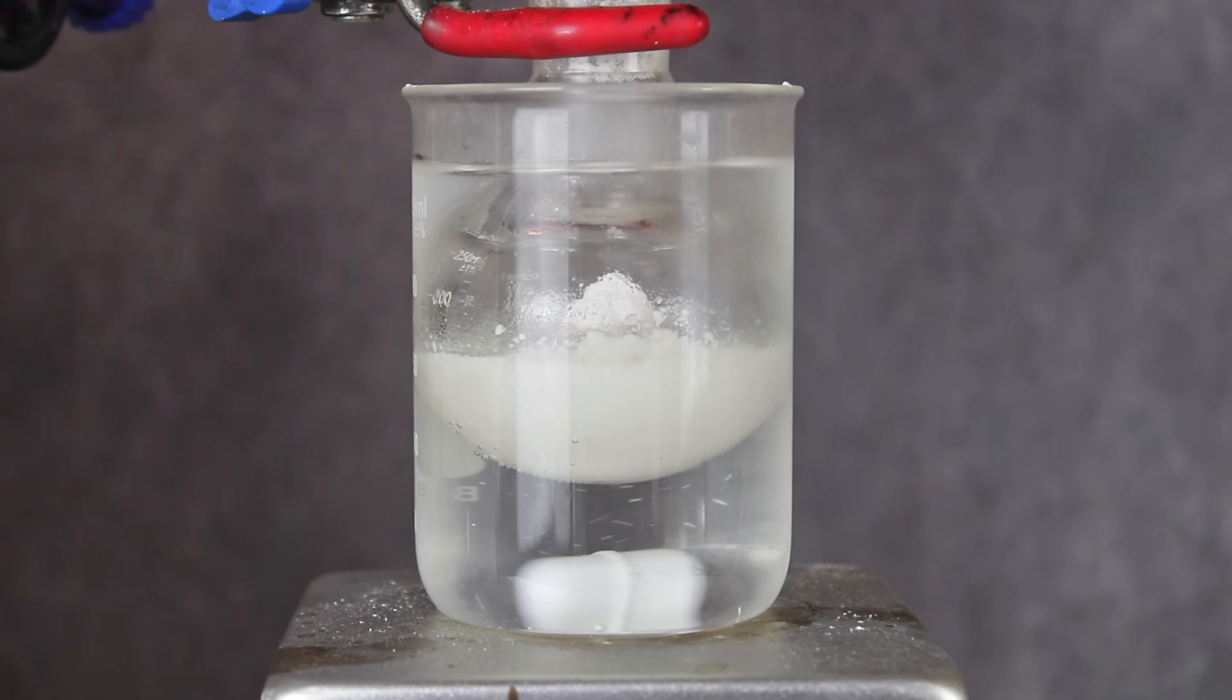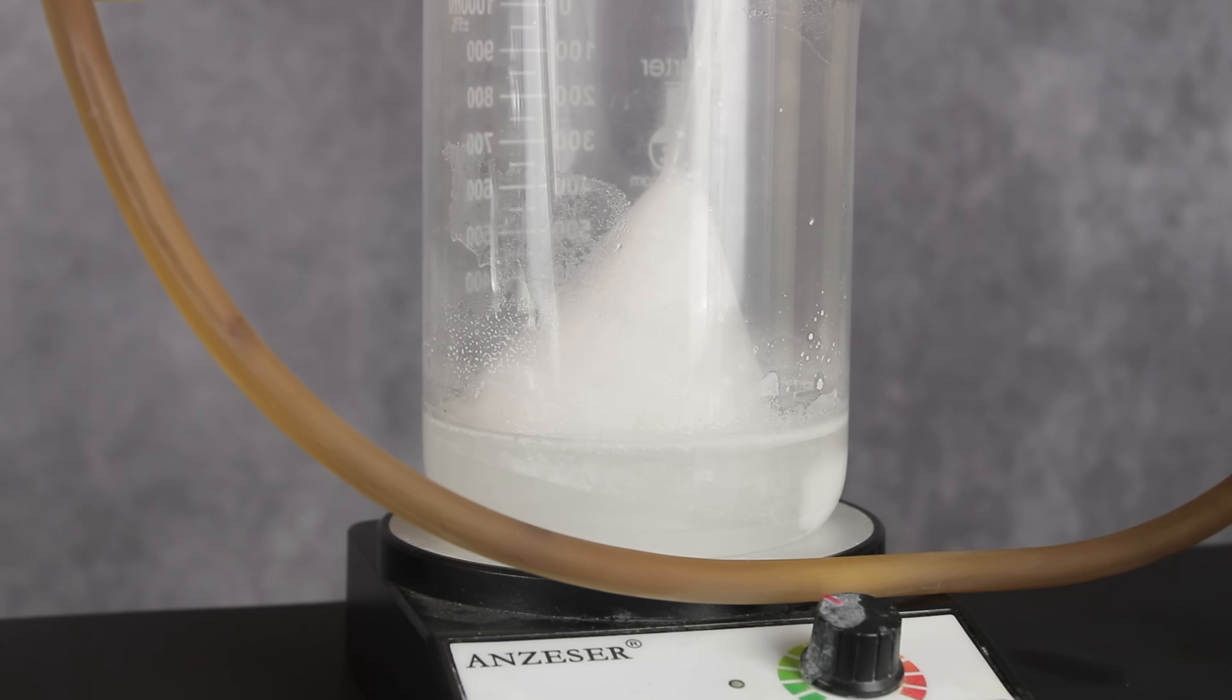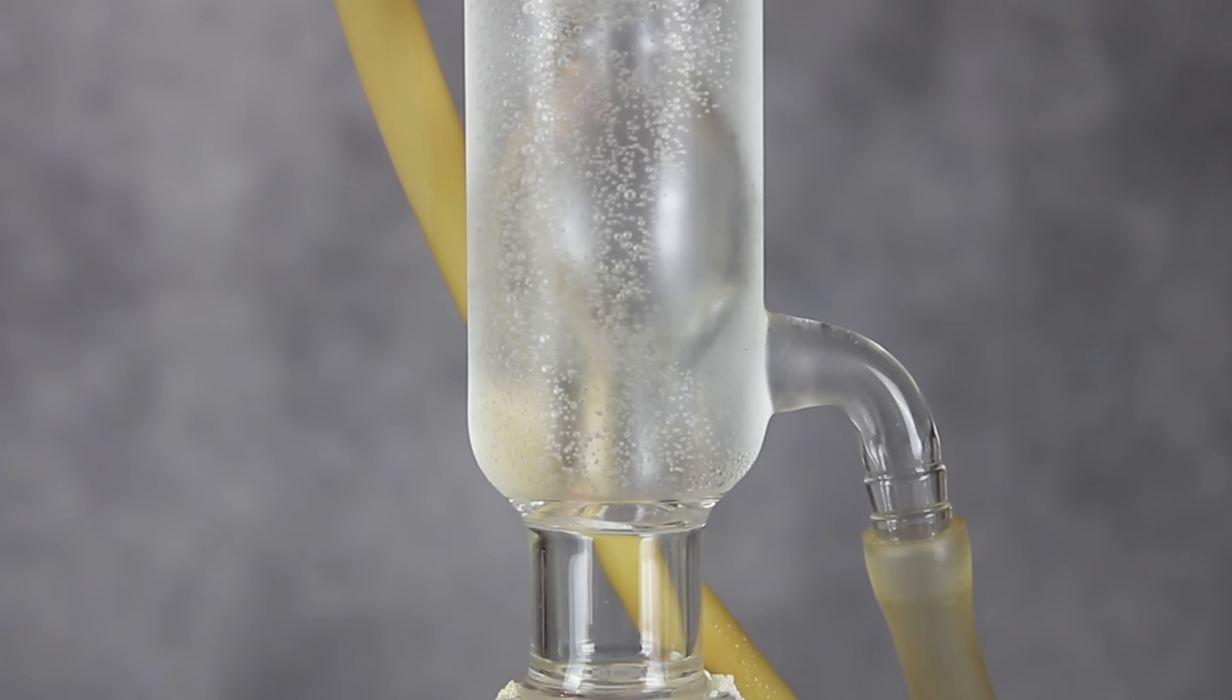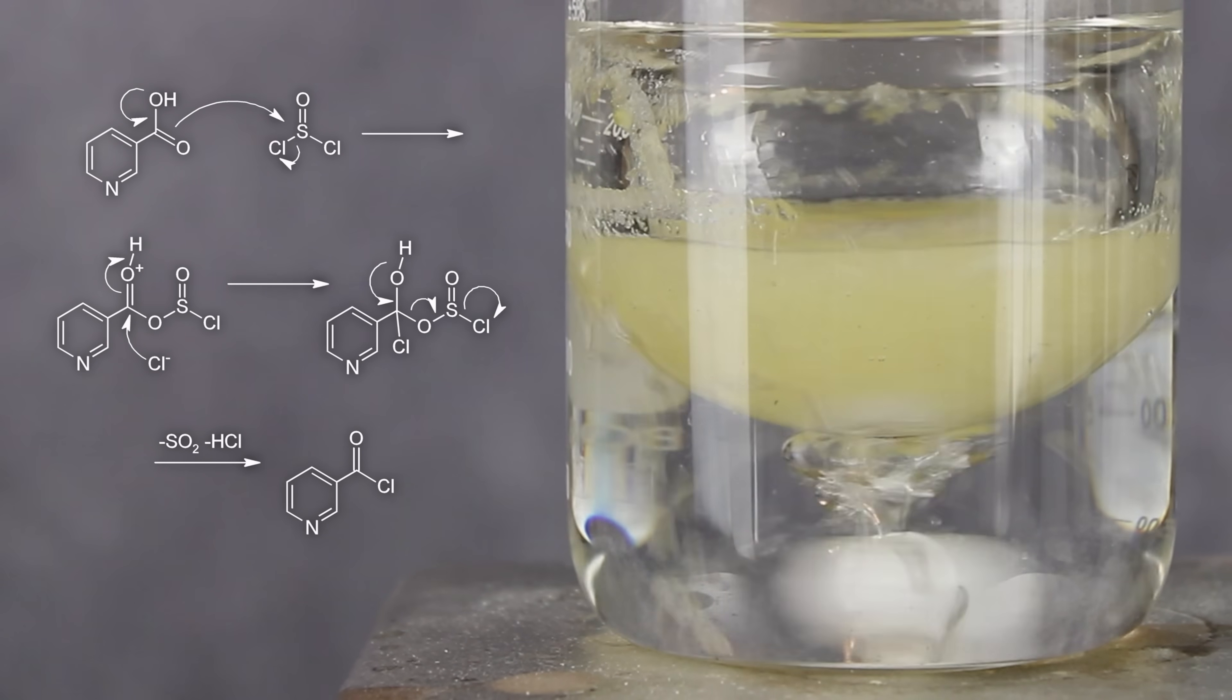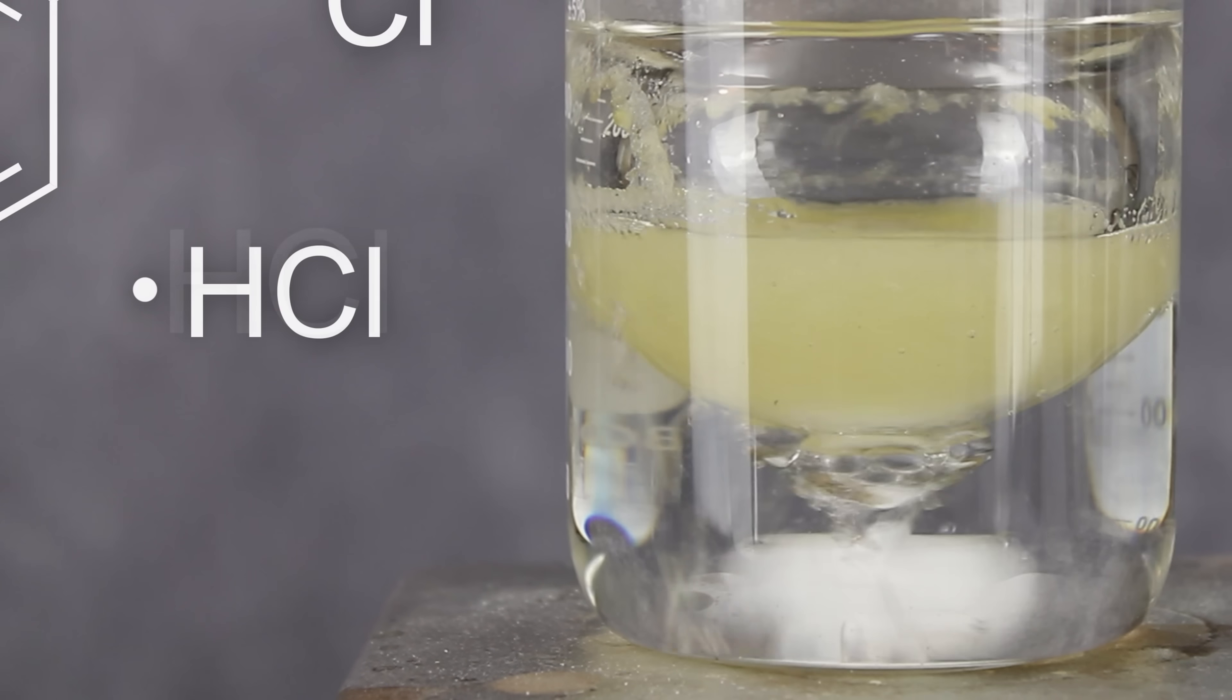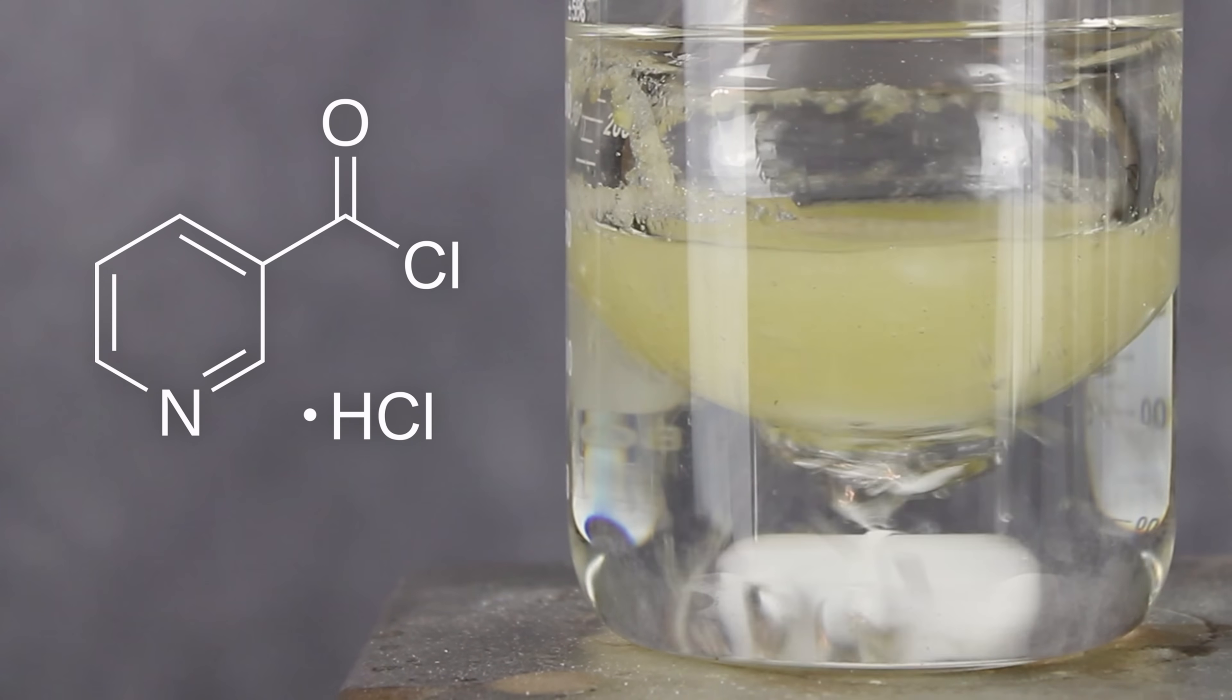Then, with everything added, a reflux condenser was connected, the water bath was brought to a boil, and a bubbler trap was set up to capture most of the noxious fumes. As the thionyl chloride began to reflux, the nicotinic acid was quickly converted into nicotinoyl chloride, and sulfur dioxide was released from solution. Hydrogen chloride was also evolved, but it reacted with the nicotinoyl chloride's pyridine ring, stabilizing the compound as its hydrochloride salt.